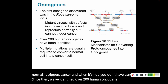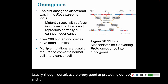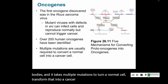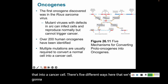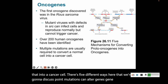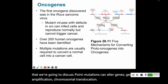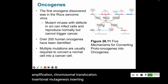Usually our cells are pretty good at protecting our bodies, and it takes multiple mutations to transform a normal cell into a cancer cell. There are five different ways we're going to discuss: point mutations that can alter genes, gene amplification, chromosomal translocation, insertional mutagenesis, and local rearrangements.